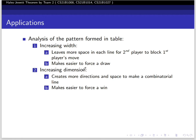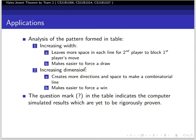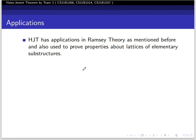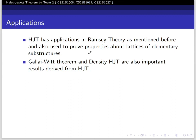The question marks in the table indicate computer simulation results yet to be rigorously proven. Other applications of HJT theorem include Ramsey theory as mentioned before, and it's used to prove properties about lattices, elementary substructures, Gallivan theorem, and density HJT are also important results derived from HJT. Thus HJT is a very crucial result in combinatorial mathematics.